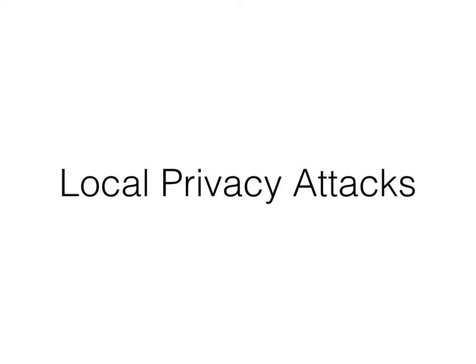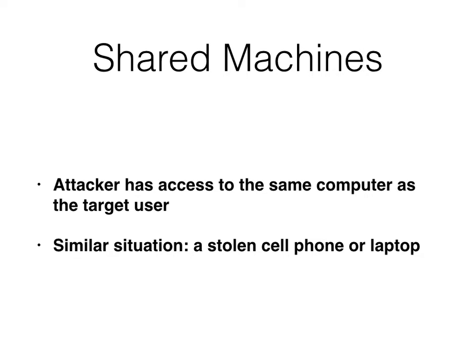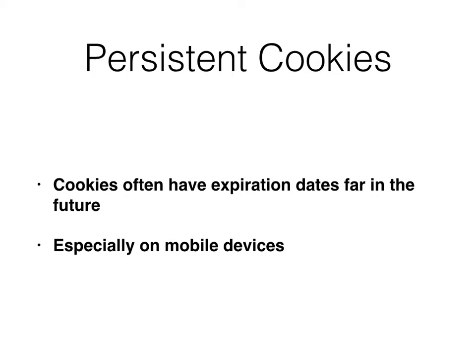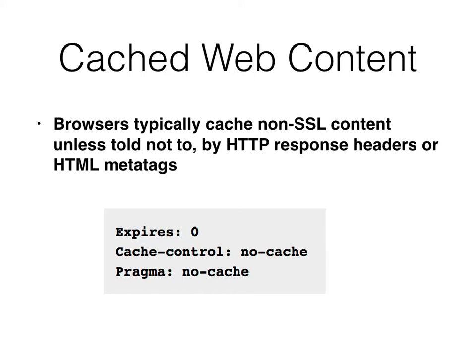Then there are privacy attacks — the case where someone has access to your physical computer. The most common case these days is stolen cell phones and stolen laptops. Your device is full of goodies: persistent cookies, especially on mobile devices, that typically last forever, and someone can just steal them. You have cached web content — HTTPS content is not cached by default, but HTTP content is, with fragments of images and web pages. You can put cache control tags in the header of your HTTP pages to tell the browser not to cache them, but if you don't, it will.